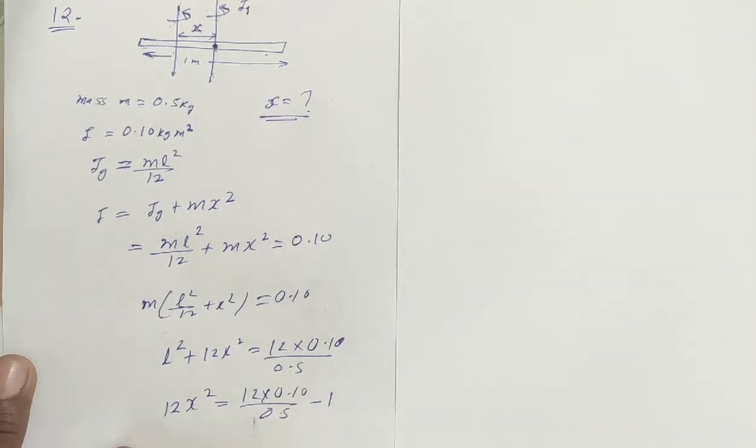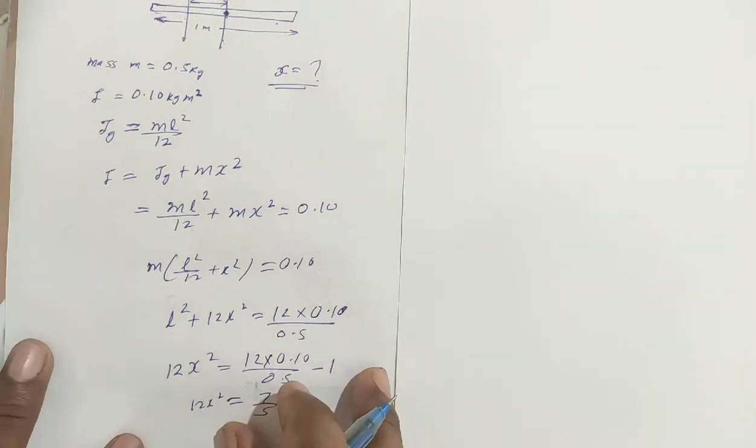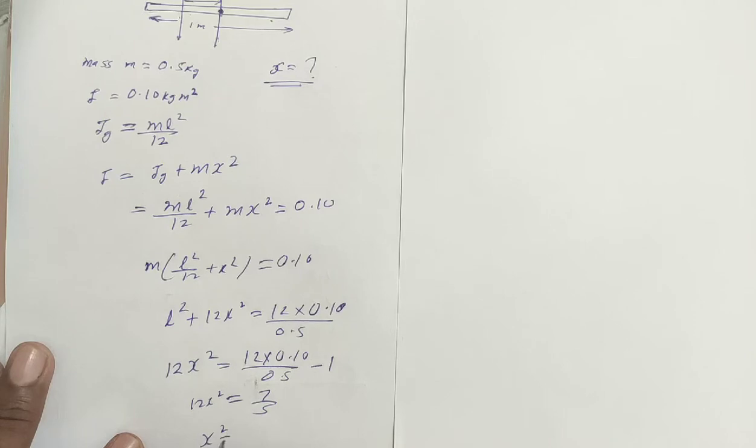12 by 5 minus 1 equals how much? This becomes 12 by 5, which becomes 7 by 5. So the answer is 7 by 5 equals 12 x square. So x square is equal to 7 by 5 divided by 12.